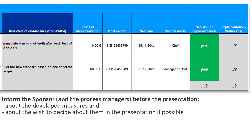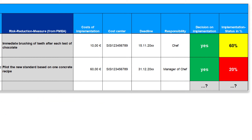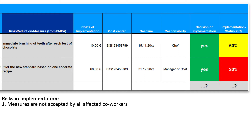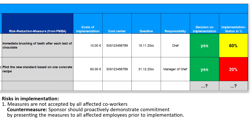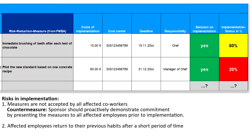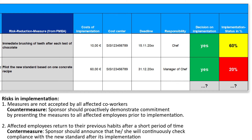Additionally, it is useful to inform the sponsor and the process owners in advance about the suggested measures, so that they are neither surprised by the measures nor by the need to decide on them. In case of positive decisions, please monitor the progress of implementation so that you are not surprised if the implementation is delayed. There are still two general risks during and after implementation. The measures may not be accepted by all affected co-workers. As a rule, the sponsor should therefore proactively demonstrate his or her commitment by presenting the measures to all affected employees prior to implementation. Affected employees may return to their previous habits after a short period of time; to proactively prevent this, please have the sponsor announce that he or she will continuously check compliance with the new standard after its implementation.